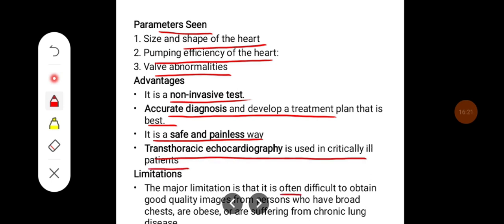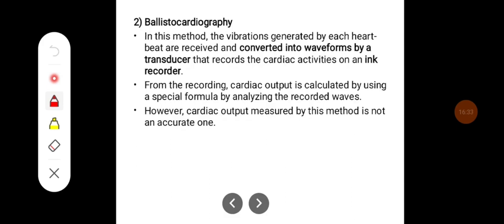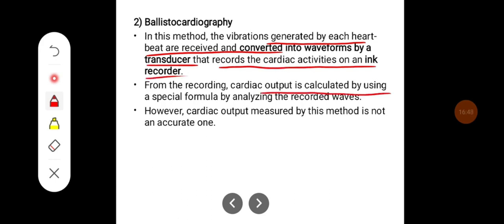A major limitation of echocardiography is that it is often difficult to obtain good-quality images from persons with broad chests, obesity, or chronic lung disease. In ballistocardiography, vibrations generated by each heartbeat are received and converted into waveforms by a transducer that records cardiac activity on an ink recorder. Cardiac output is calculated using a special formula by analyzing the recorded waves. However, cardiac output measured by this method is not accurate.